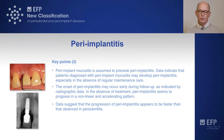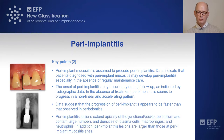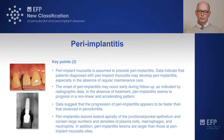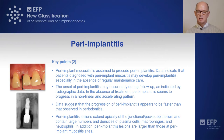Another feature of the progression of peri-implantitis is that it seems to be faster than that observed for periodontitis around teeth. And histologically, when you look at peri-implantitis lesions, they do extend apical of the pocket epithelium, and they contain large numbers and densities of plasma cells, macrophages, and neutrophils. In addition, peri-implantitis lesions are larger than those observed at peri-implant mucositis, but also at periodontitis lesions around teeth.